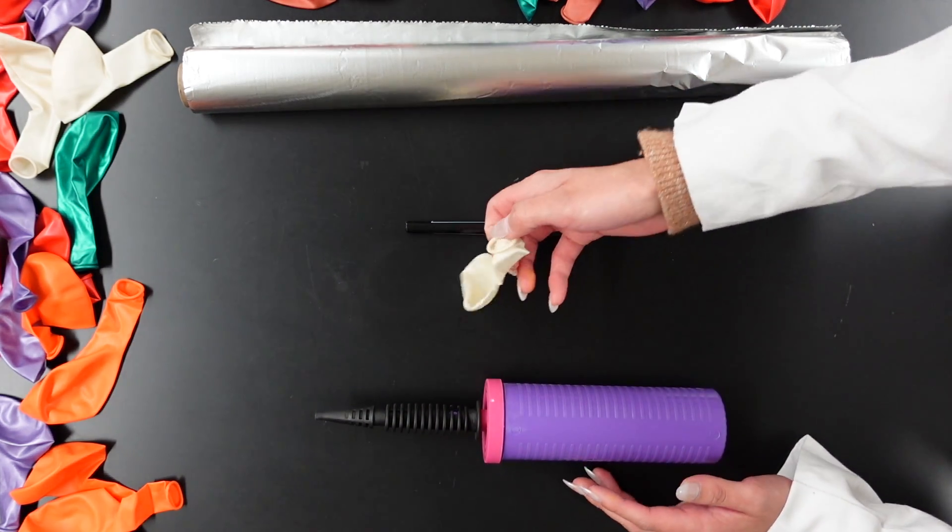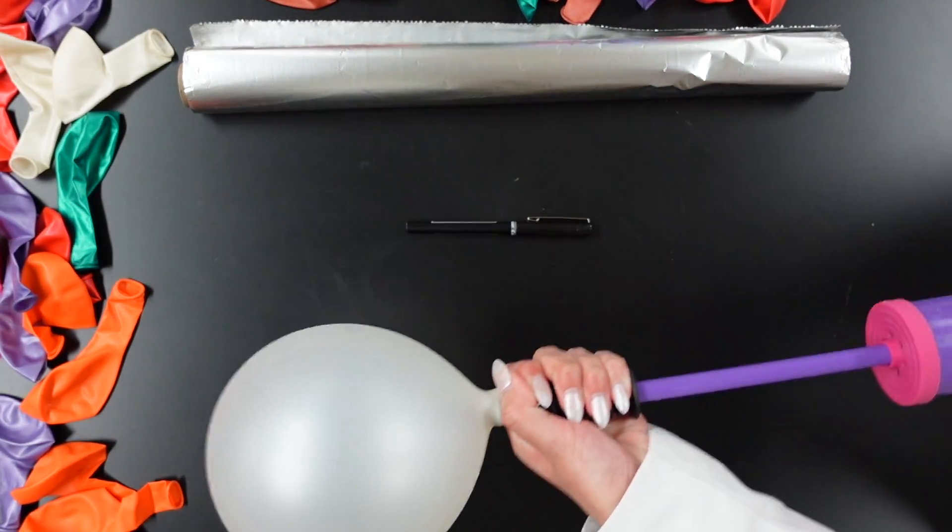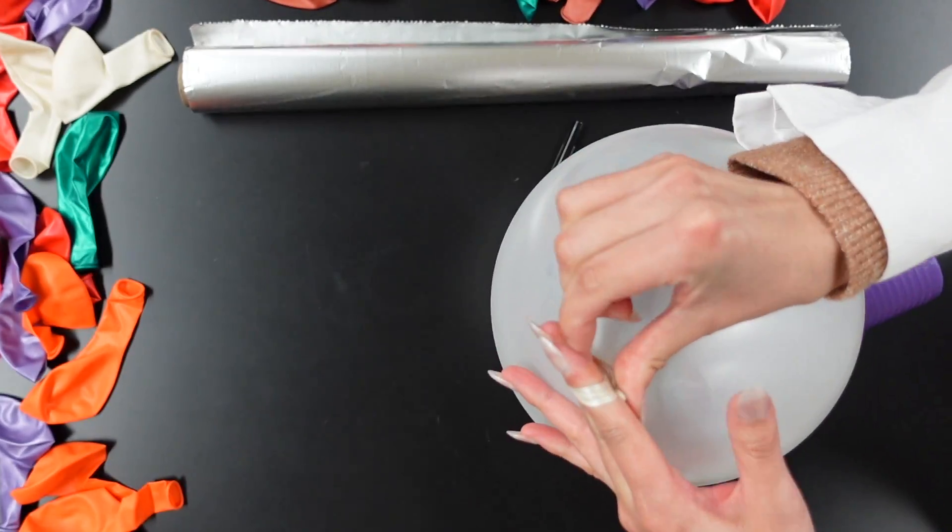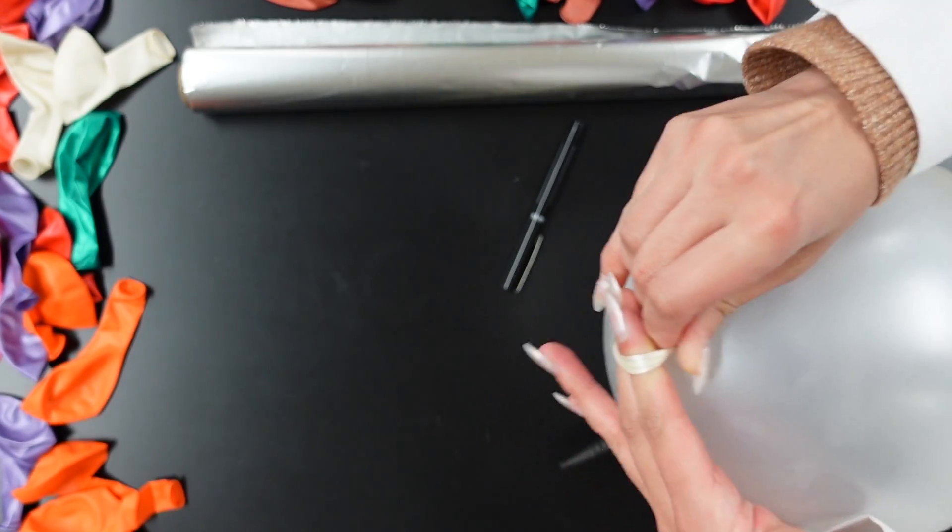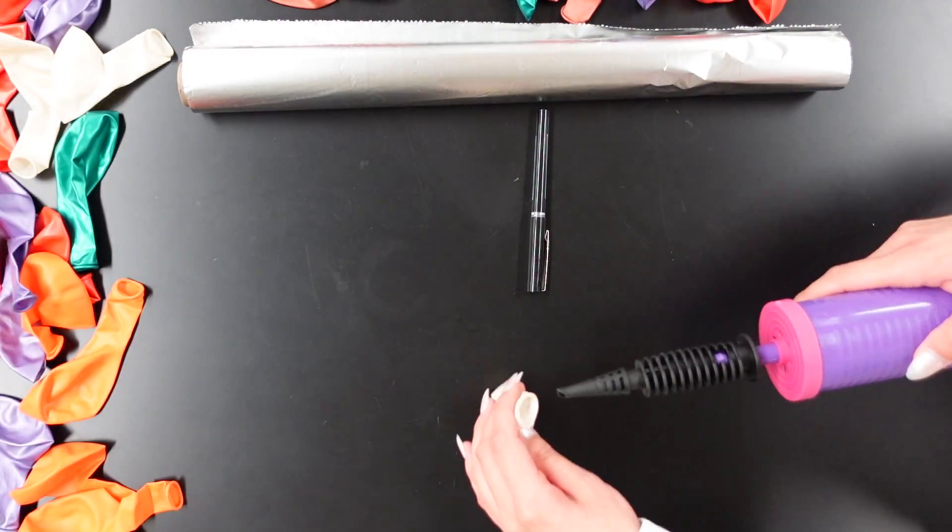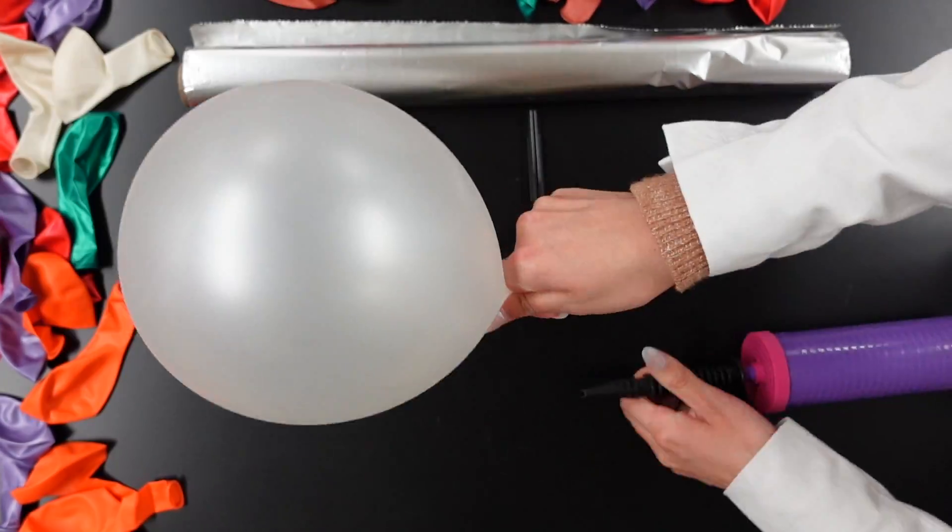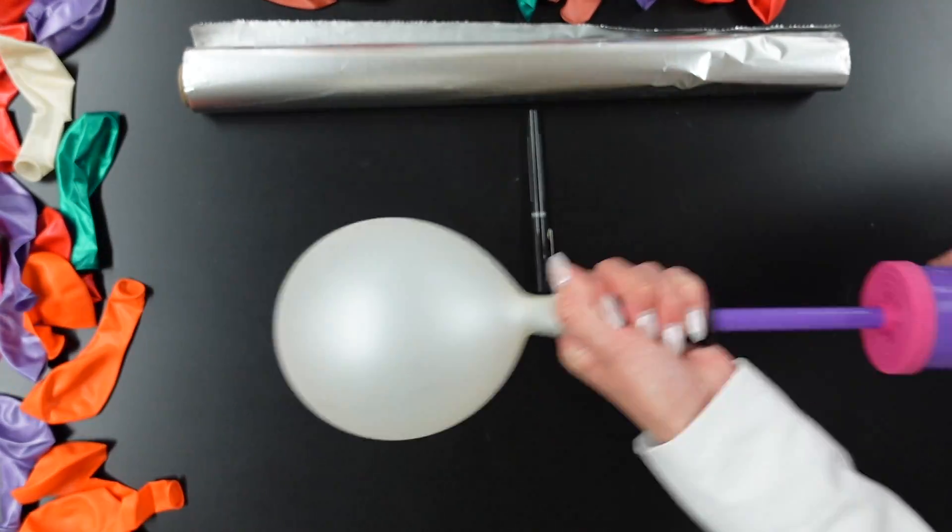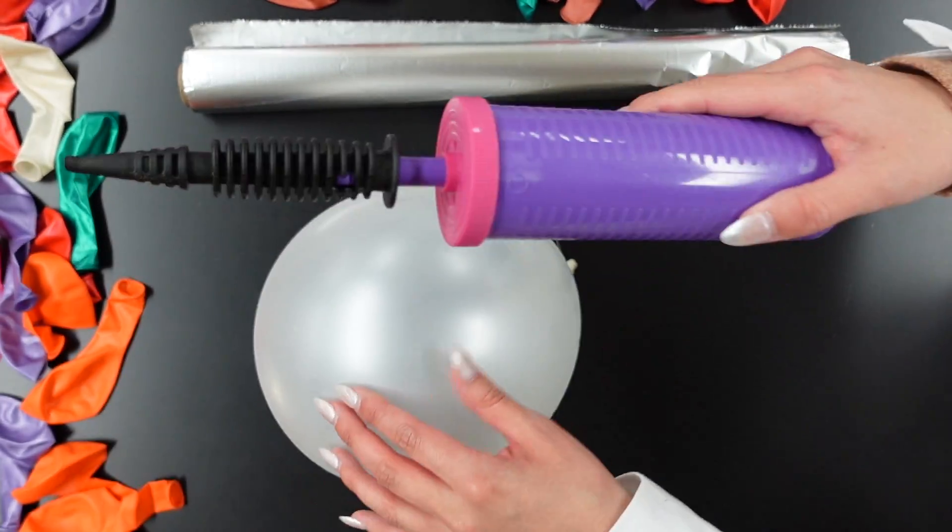Right now we're going to get started and I like how shiny these little white ones are so we're going to use these ones. And tie off the end. There's one balloon. I'm going to set this aside for just a second.